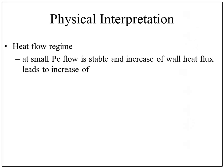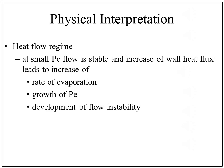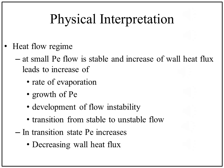At small Peclet number, the flow is stable and an increase of the wall heat flux leads to an increase of the rate of evaporation, growth of the Peclet number, development of flow instability, and transition from stable to unstable flow. The Peclet number corresponding to transition from stable to unstable flow decreases with increasing wall heat flux.